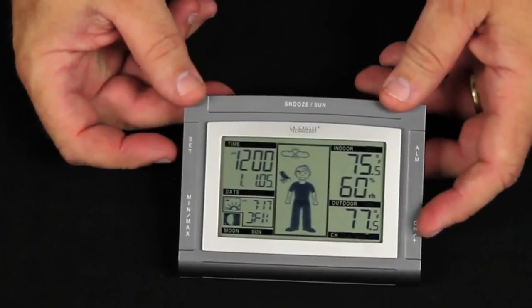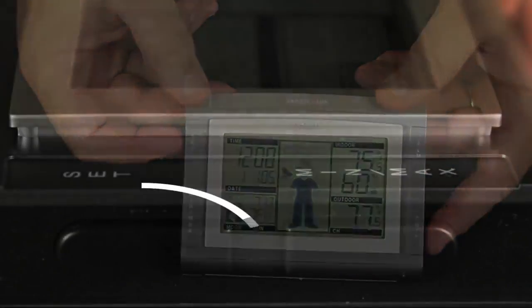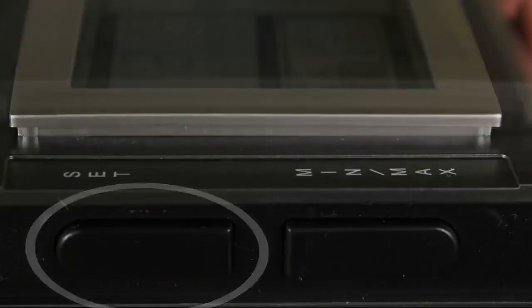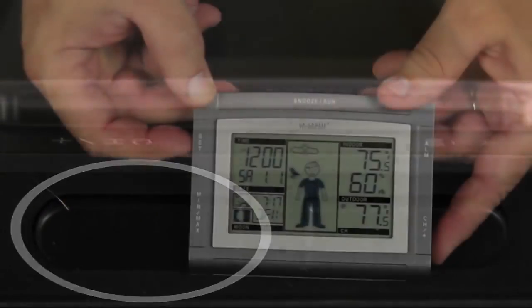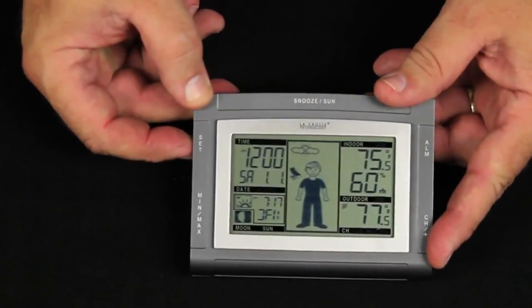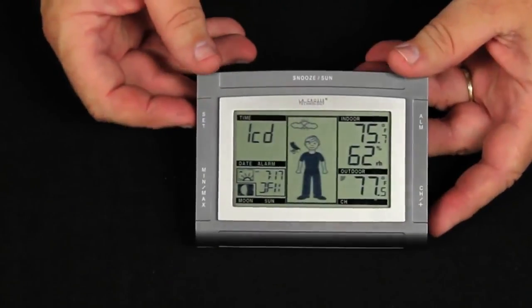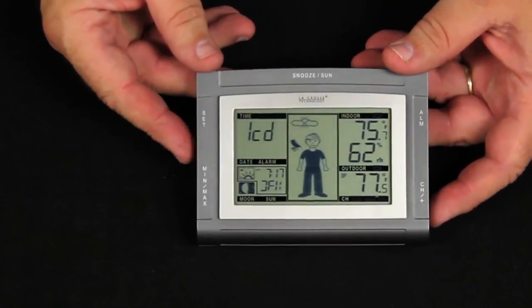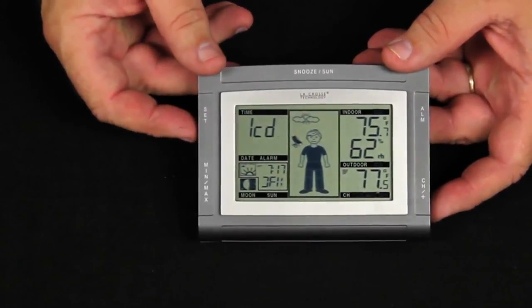We use a set button and the channel plus button. When we press the set button we hold it long enough to get the letters LCD with a flashing number up where the time is. Once we see that the number that's flashing simply is how dense the display will be.